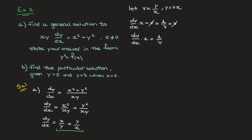Rearranging, we find that v dv equals 1 over x dx. We now have all the v's on the left hand side and all the x's on the right hand side, so we integrate. The integral of v with respect to v equals the integral of 1 over x with respect to x. Integrating, the left hand side becomes v squared over 2, and that's equal to ln of the absolute value of x plus a constant of integration c.